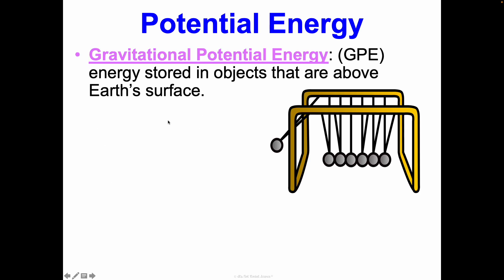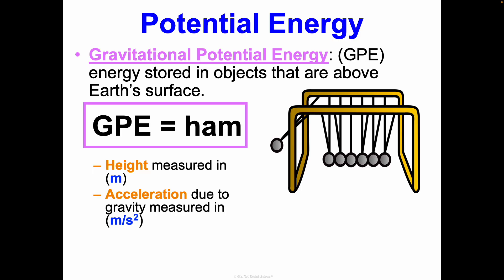So specifically gravitational potential energy, that GPE, it's energy stored in objects that are above earth's surface. And the equation to find this is GPE equals HAM. So H stands for height, which is measured in meters. A stands for acceleration, but it's specifically the acceleration due to gravity measured in meters per second squared. So that's our 9.8 meters per second squared. Because remember, GPE is anything that is above the earth's surface. That's why the acceleration due to gravity will apply here. And then mass is measured in kilograms. Sometimes people write this equation as GPE equals MGH. Again, where the M is mass, the H is height, and the G is the acceleration due to gravity. But I think ham is just easy to remember. And I like that it's ham. So we use acceleration here and a lot of textbooks also use that too.